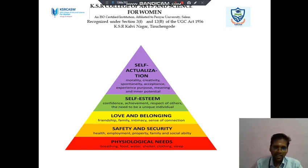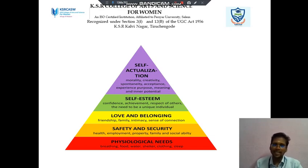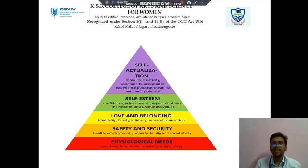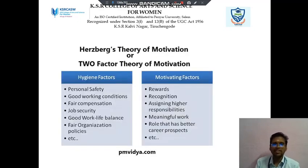Then self-actualization. It covers morality, creativity, responsibility, assistance, experience, purpose, meaning, and inner potential. These are the five points we discuss in Maslow's theory.